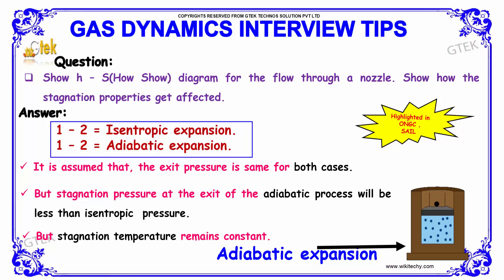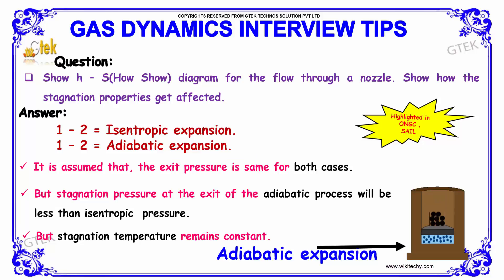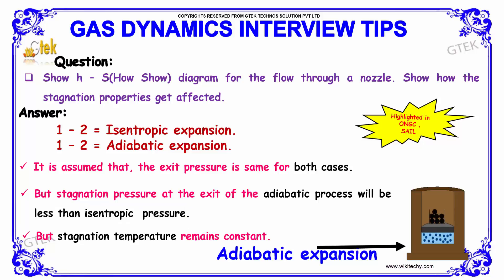The stagnation pressure at the exit of the adiabatic process will be less than that of the isentropic process. However, in terms of stagnation temperature, it remains constant for both cases.